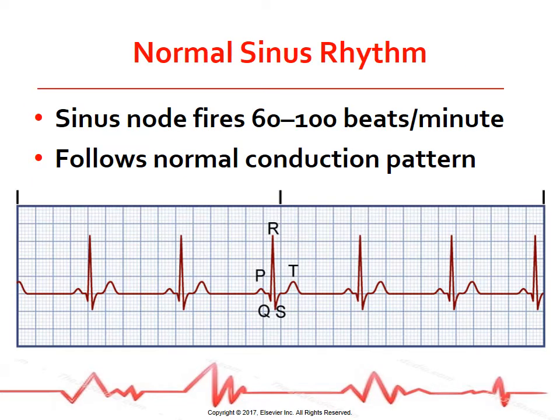Normal sinus rhythm refers to a rhythm that starts in the SA node at a rate of 60 to 100 times per minute and follows the normal conduction pathway. Rhythm is regular. The P wave precedes each QRS complex and has normal shape and duration. The PR interval is normal, and the QRS complex has normal shape and duration.